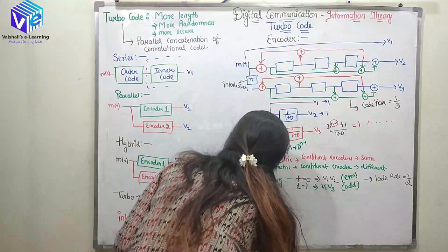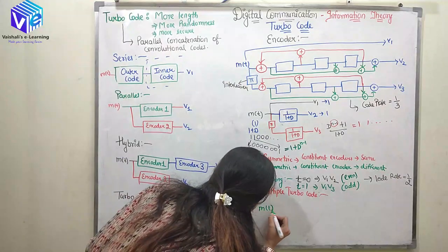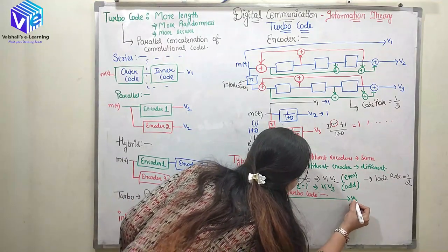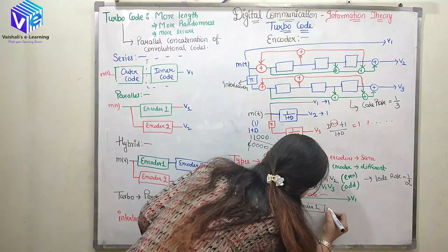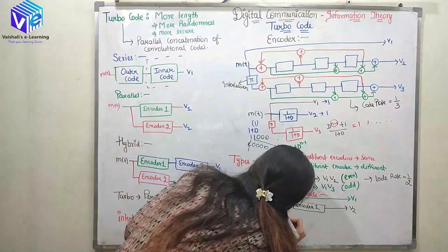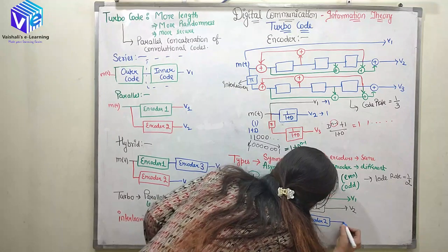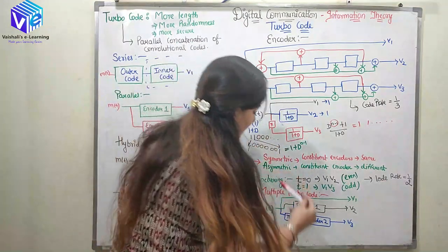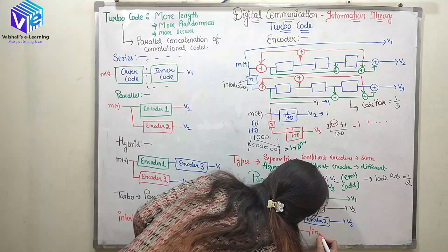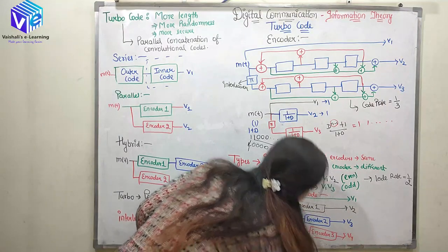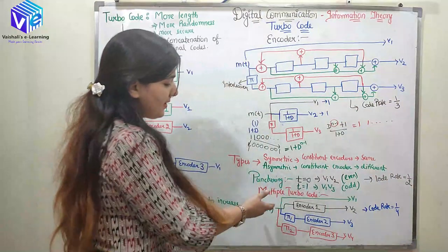Now I have multiple turbo code. In multiple turbo code, I will have the message signal, I will take the direct output which is V1, after that I will pass it to encoder 1 and take the output which is V2. After that I will pass it through interleaver 1, then interleaver 2, and I will get V4. Here my code rate is 1 by 4. This is called my multiple turbo code.